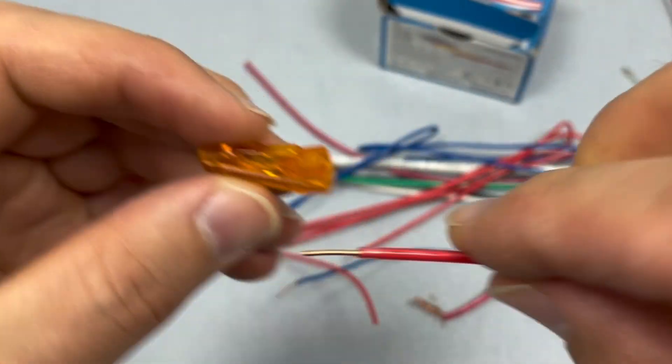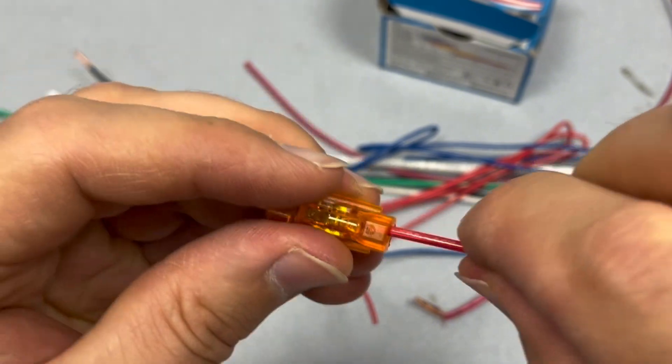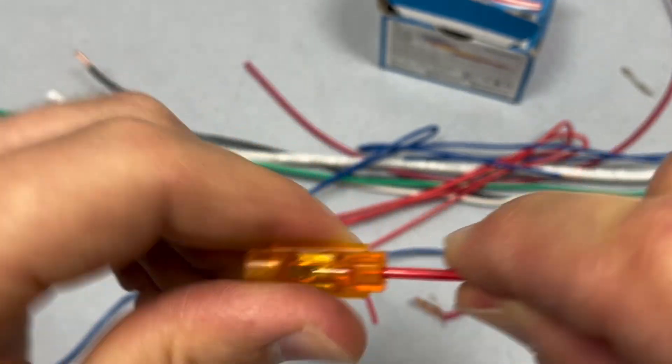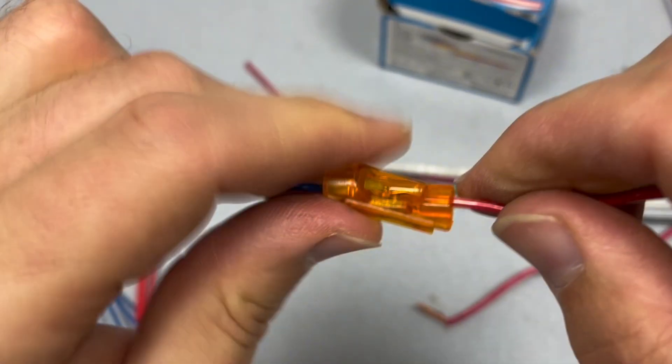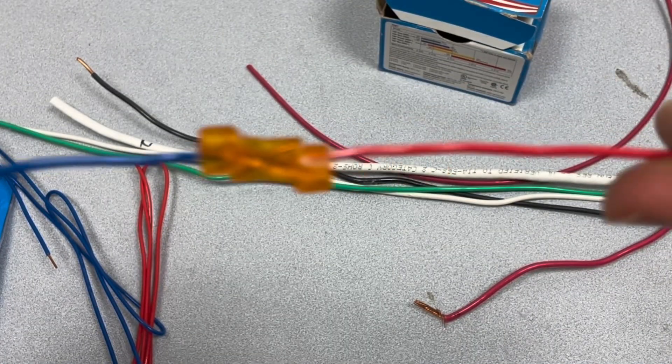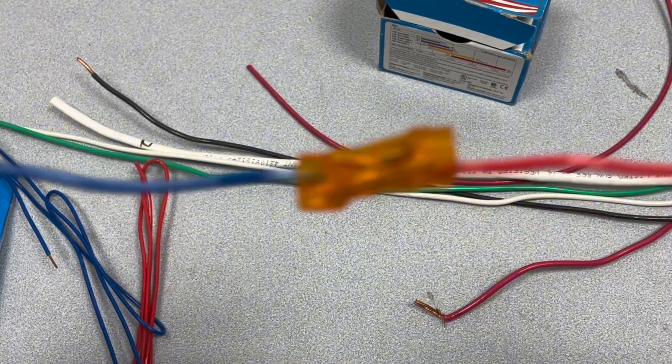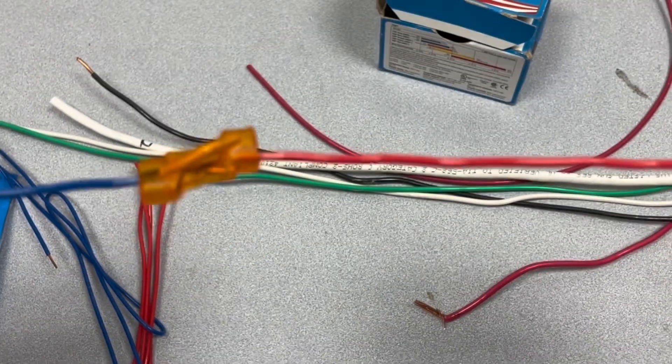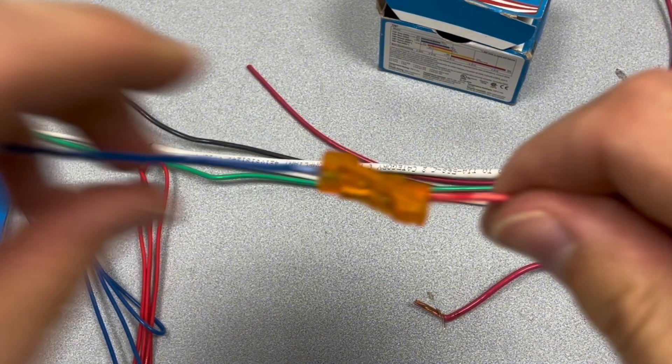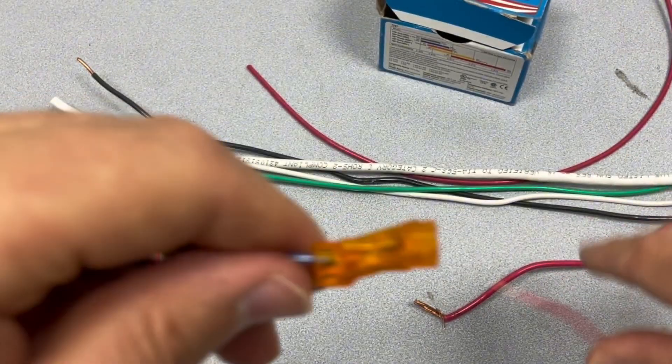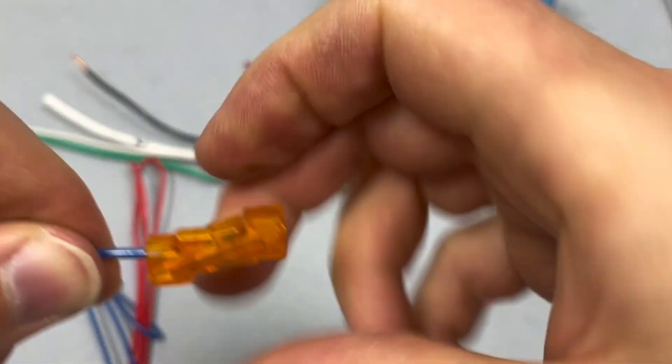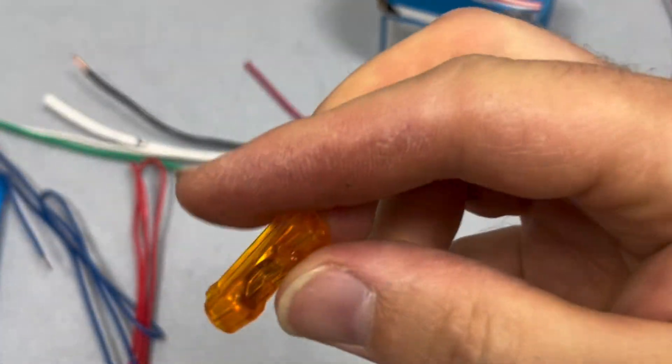This is a smaller size wire. And here you go, same thing. Twist, pull it out. Twist it, pull it out.